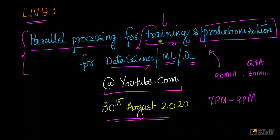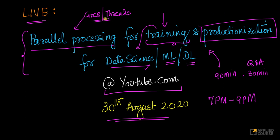We will focus on training on large datasets for data science applications, machine learning and deep learning using multiple cores and multiple threads that you may have on your single computer. That's what parallel processing is all about. We will also touch upon how to use multiple cores and threads for better productionization of your machine learning and deep learning models.